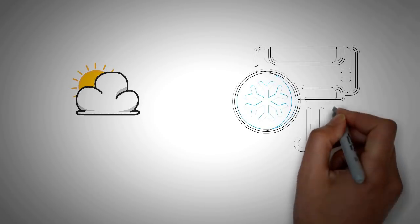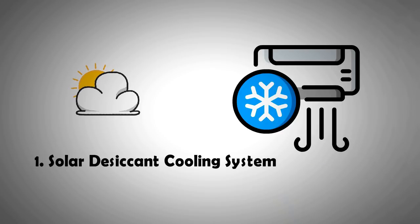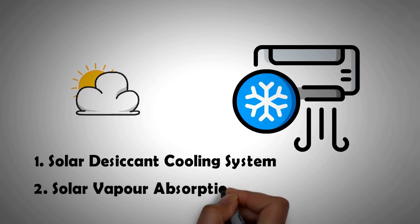There are two systems that we will be mentioning. First is the desiccant cooling system and the other is the vapor absorption system. Both can use sun's heat directly as an energy source to run.